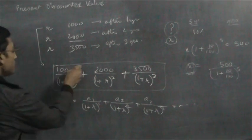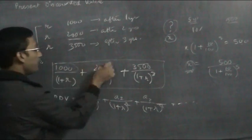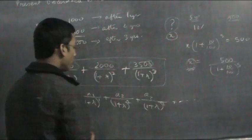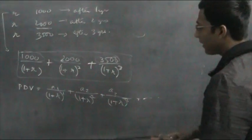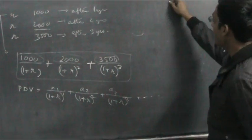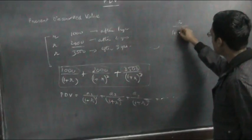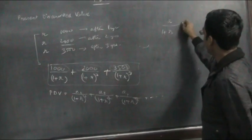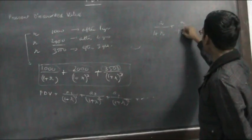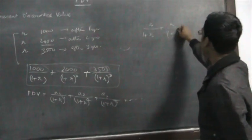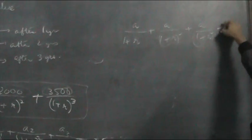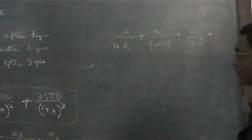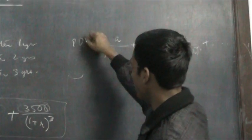Now, we are making different payments every year. Suppose we have to make the same payment every year. Then the present discounted value is A/(1+R) + A/(1+R)^2 + A/(1+R)^3 and so on. This sum is the present discounted value for equal annual payments.